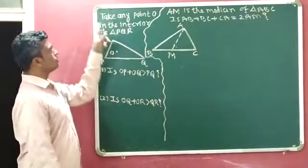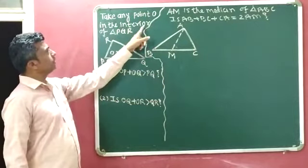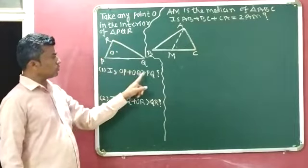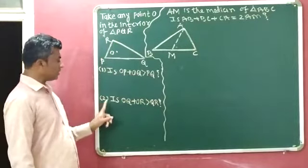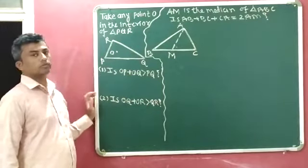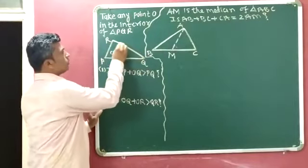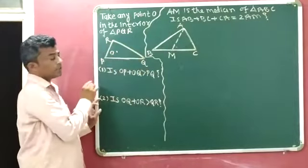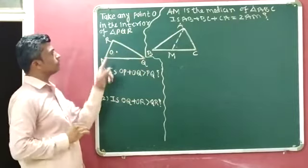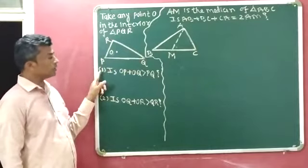See here question number 2. Take any point O in the interior of triangle PQR. We need to check: is OP plus OQ greater than PQ? And is OQ plus OR greater than QR? Triangle PQR is given to us and point O is available inside the triangle PQR. First we will solve question 1.